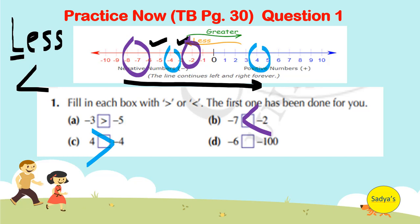And lastly, minus 6 and minus 100. Now, we don't see minus 100 on the number line. But we can estimate minus 100 would be somewhere here. And minus 6 is here. So minus 100 is a smaller number and minus 6 is a greater number. So minus 6 is greater than minus 100.